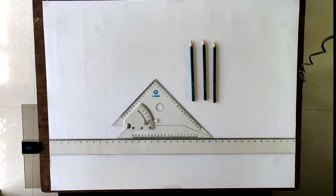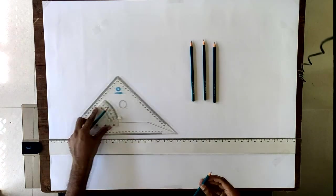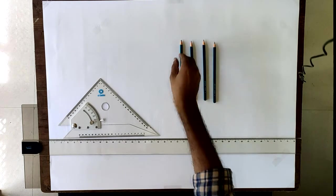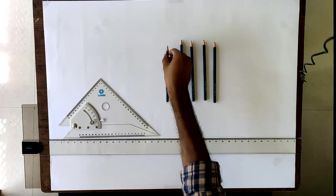HB, then moving on to the darker side, B and 5B.